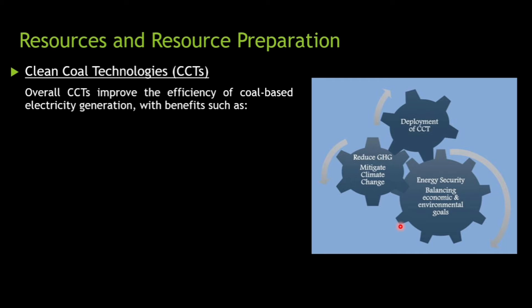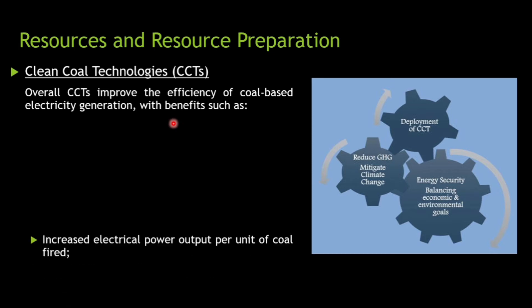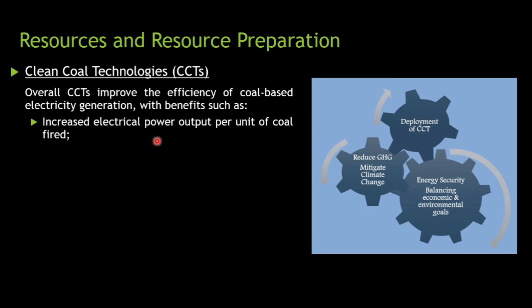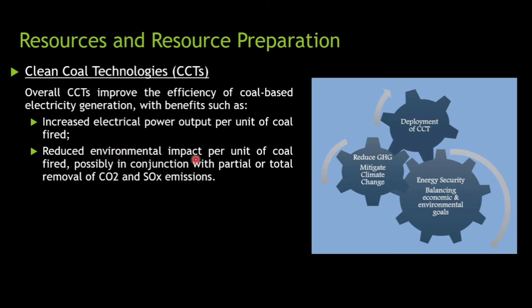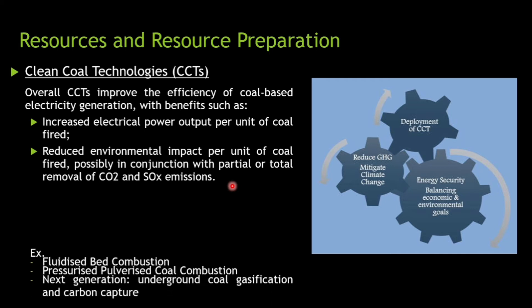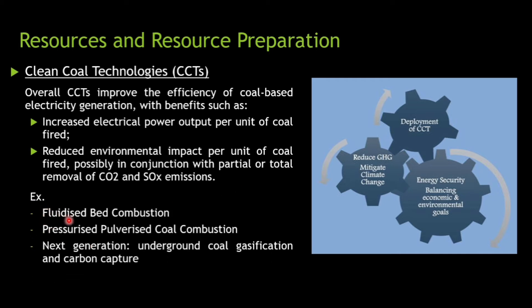CCTs improve the efficiency of coal-based electricity generation with benefits such as increased electrical power output per unit of coal fired and reduced environmental impact per unit of coal fired — eliminating carbon dioxide and sulfur compound emissions, thereby reducing greenhouse gases. Techniques include fluidized bed combustion, where carbon dioxide gets captured, and pressurized pulverized coal combustion.